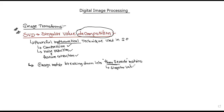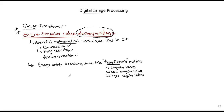Singular values — left singular values, right singular values, and singular values. Breaking down into three separate matrices allows manipulating the image information more effectively. The image information is stored in these three separate matrices.